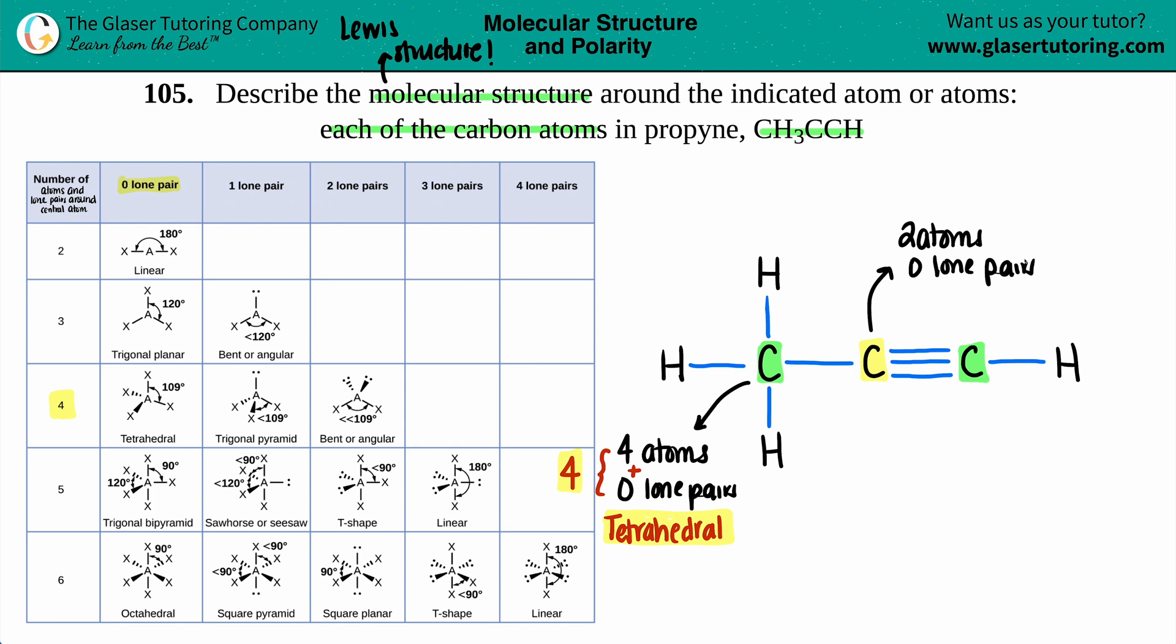So the first thing we have to do is we just have to add the two numbers together. So two plus zero is two. And maybe I'll put this in green. So now we're over here. And there's only one option for if you just have a total number of two, because you'll never have lone pairs. So this one is called linear.